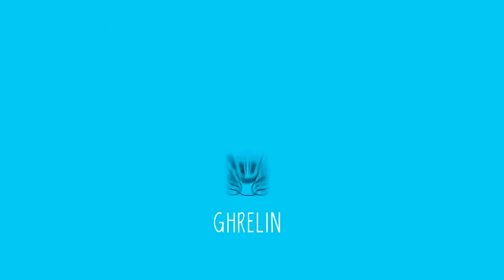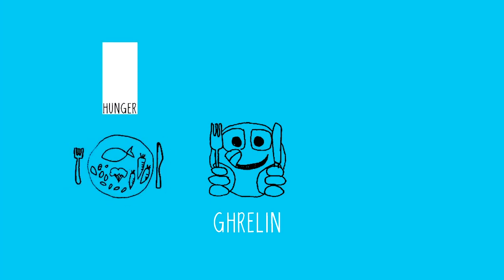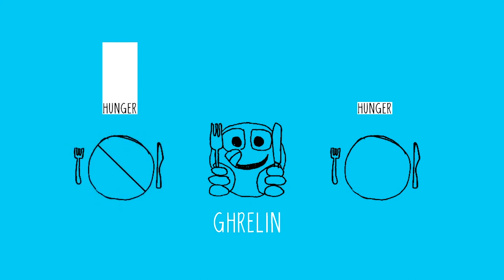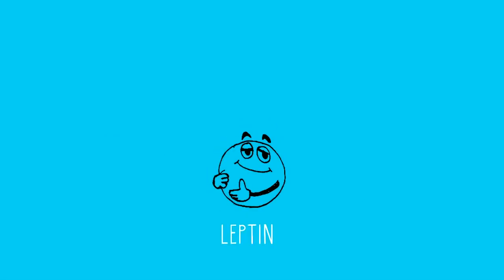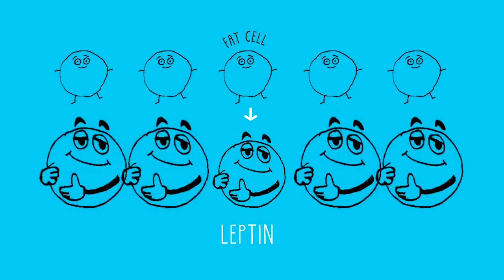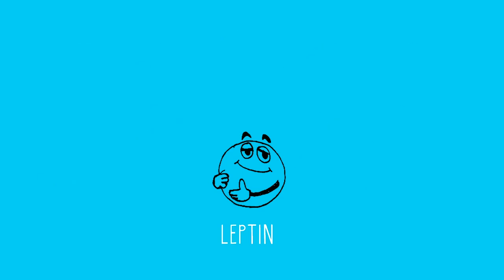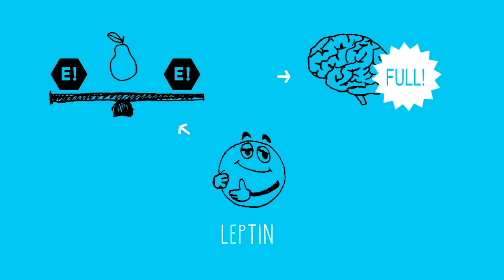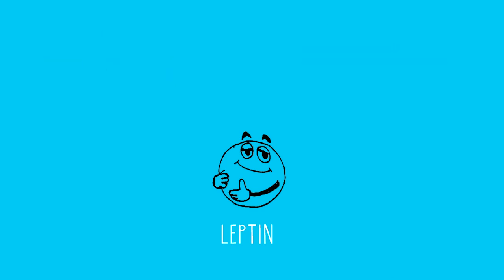Ghrelin is important for the feelings of hunger. We have the highest amount of it right before a meal and the lowest right after a meal. Those who are fasting or have chronically low intakes of food will have ghrelin released more often to signal that their body is hungry. Leptin is important for shutting down hunger. It's secreted by fat cells — so the more fat cells you have, the more leptin you have. Leptin is responsible for regulating energy balance as well, meaning the amount of food you consume, by signaling to the brain when we're full. It's the opposite of ghrelin.